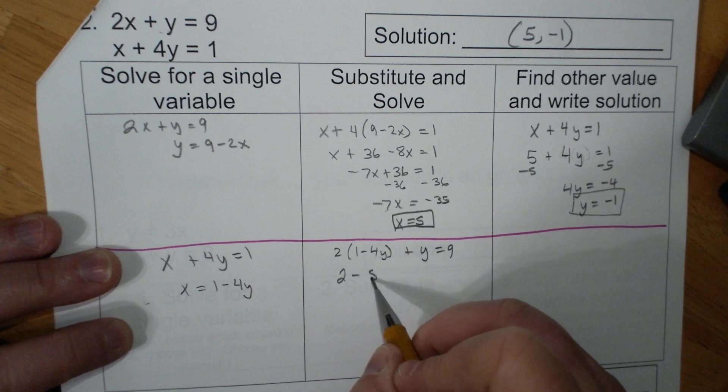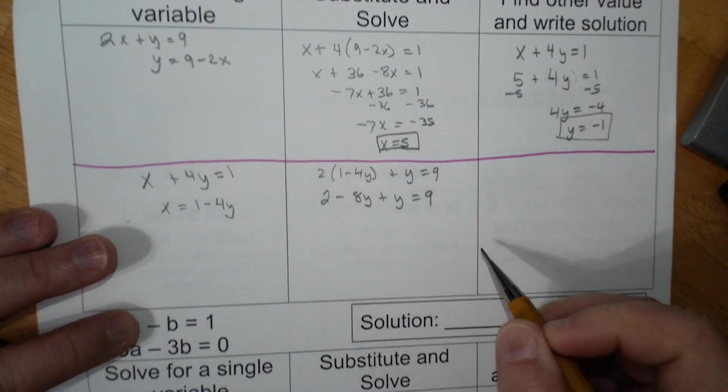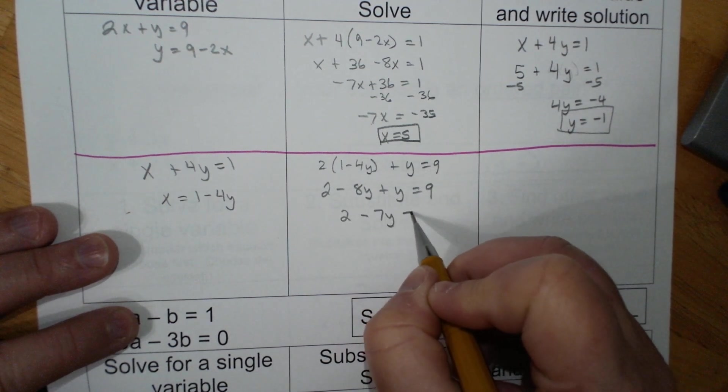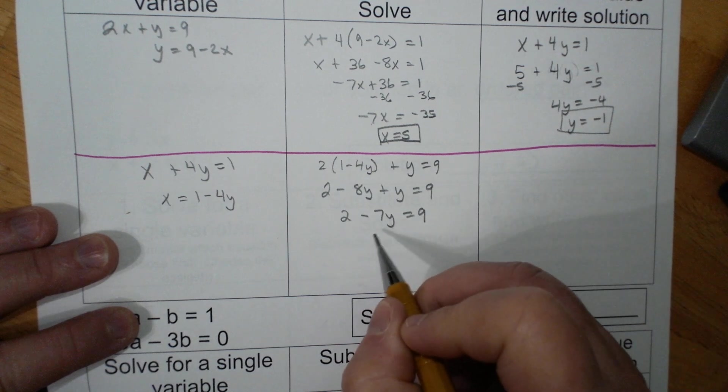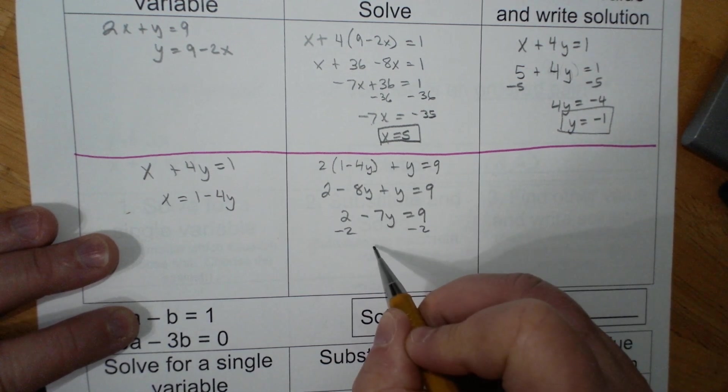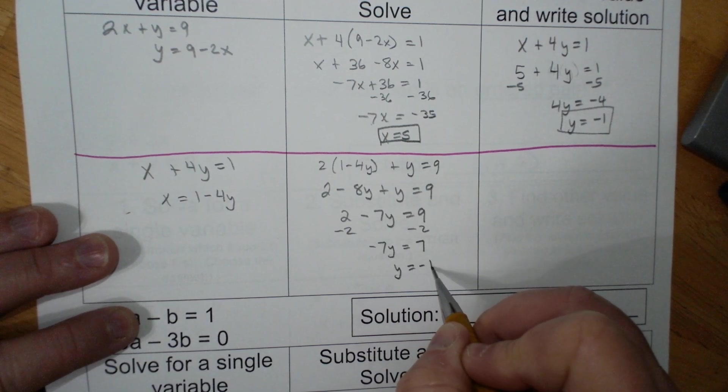2 minus 8y plus y equals 9. 2 minus 7y equals 9. I'm going to subtract 2, subtract 2. Negative 7y equals 7, y equals negative 1.